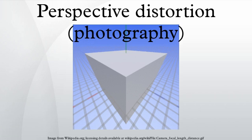In photography and cinematography, perspective distortion is a warping or transformation of an object and its surrounding area that differs significantly from what the object would look like with a normal focal length, due to the relative scale of nearby and distant features.